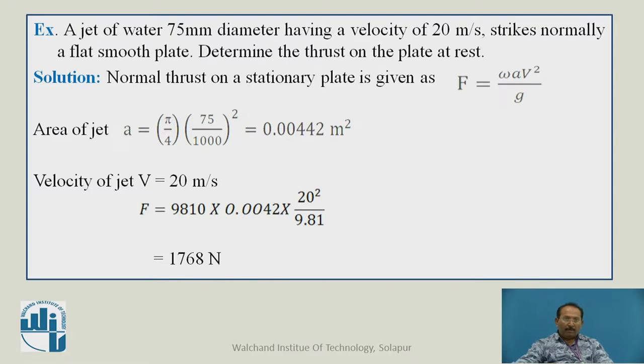We will solve one problem. A jet of water 75 millimeter diameter, having velocity of 20 meter per second, strikes normally a flat smooth plate. Find the thrust on the plate at rest. The normal thrust on the stationary plate is F equals ωAV²/g.